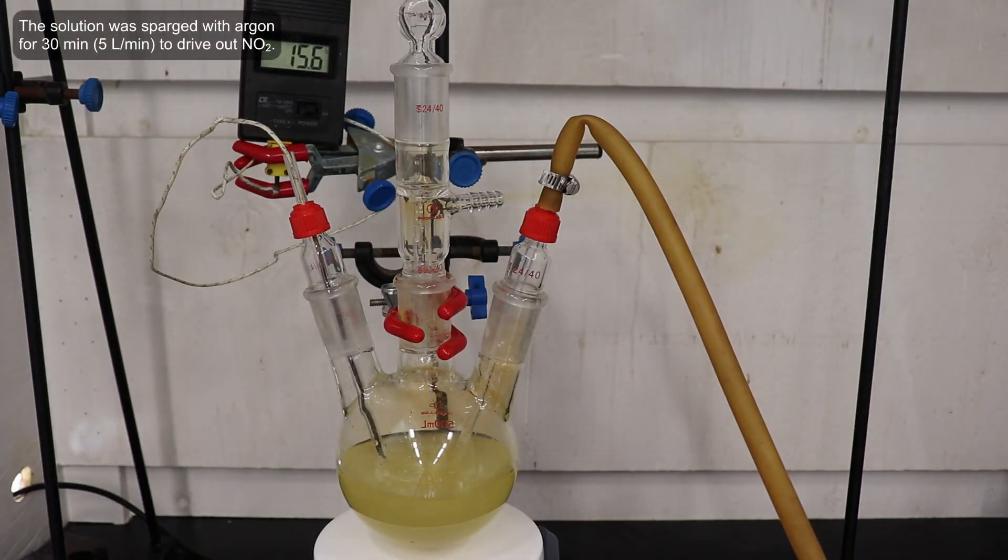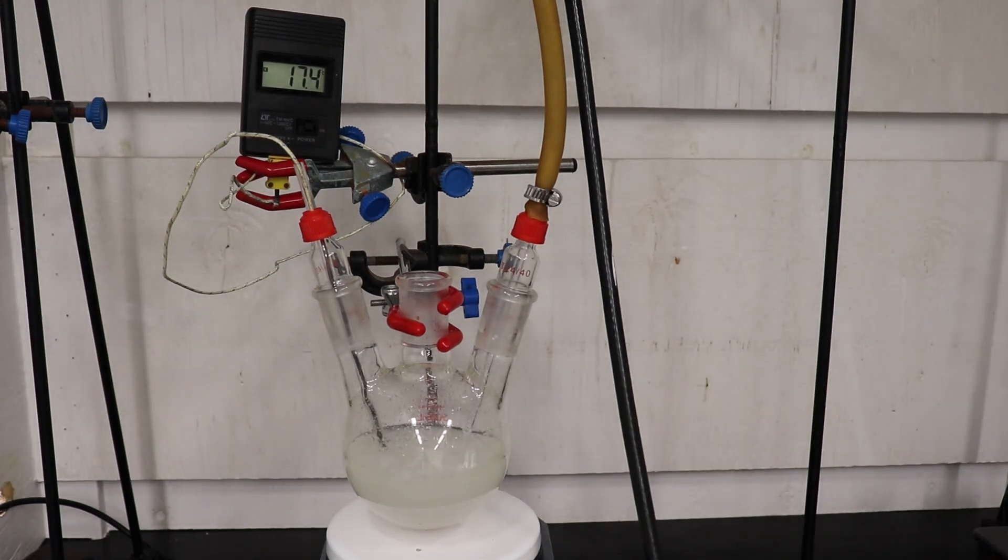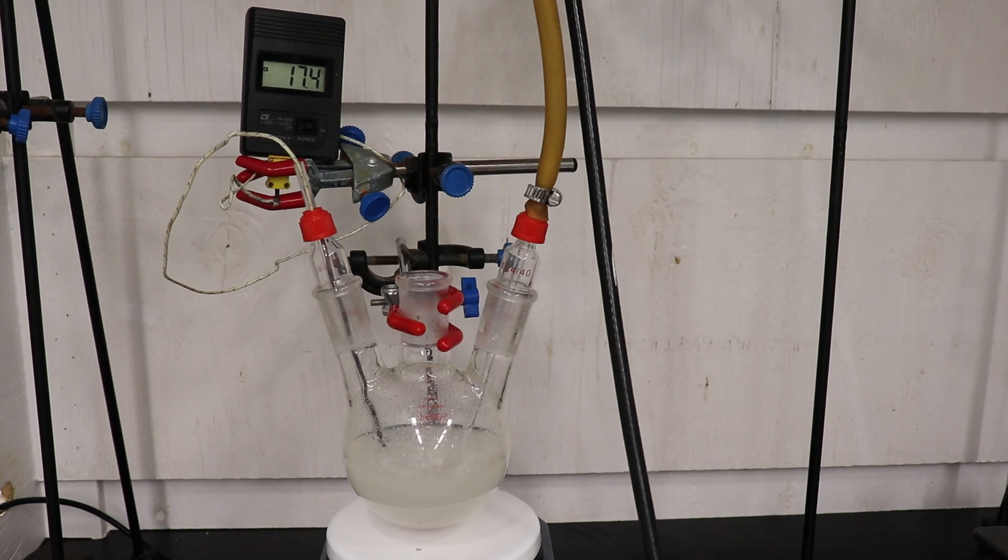To remove the remaining nitrogen dioxide, I sparged the solution with argon for 30 minutes, with a flow rate of 5 liters per minute. This successfully drove out all of the dissolved nitrogen dioxide, leaving me with a colorless solution.